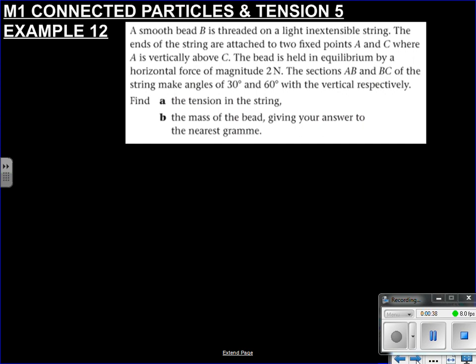So let's read this. Smooth bead - instantly smooth bead we're thinking tension's the same because it's in equilibrium, it's going to even out our tensions across string. So that's good. Remember if it's attached, the tensions may not necessarily be the same. On a light and extensible string, the ends of the strings are attached to two fixed points A and C, where A is vertically above C. So like always you can stop the tape and you can start drawing out your forces by yourself. The bead is held in equilibrium by a horizontal force of magnitude 2 Newtons, the sections AB and BC of the string make angles 30 degrees and 60 degrees respectively.